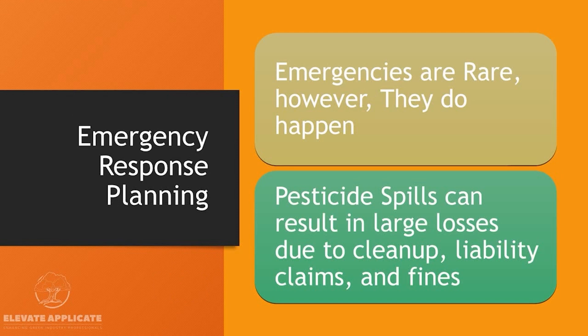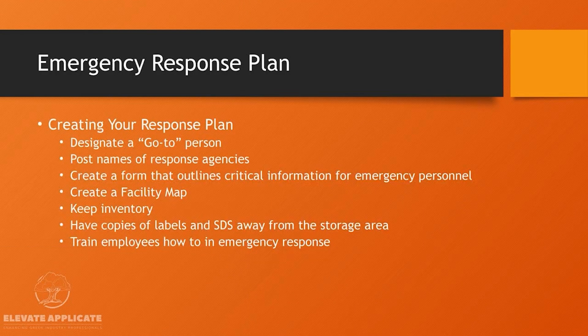Emergency response planning — emergencies are rare, but they do happen and we need to prepare for them. You need to have plans built out, people need to be trained in those plans, and they need to know what to do. Pesticide spills can result in large losses due to cleanup, liability, claims, and fines — from the city, the township, the EPA, or the Department of Agriculture. So have your insurances in order and do whatever you can to stop spills.